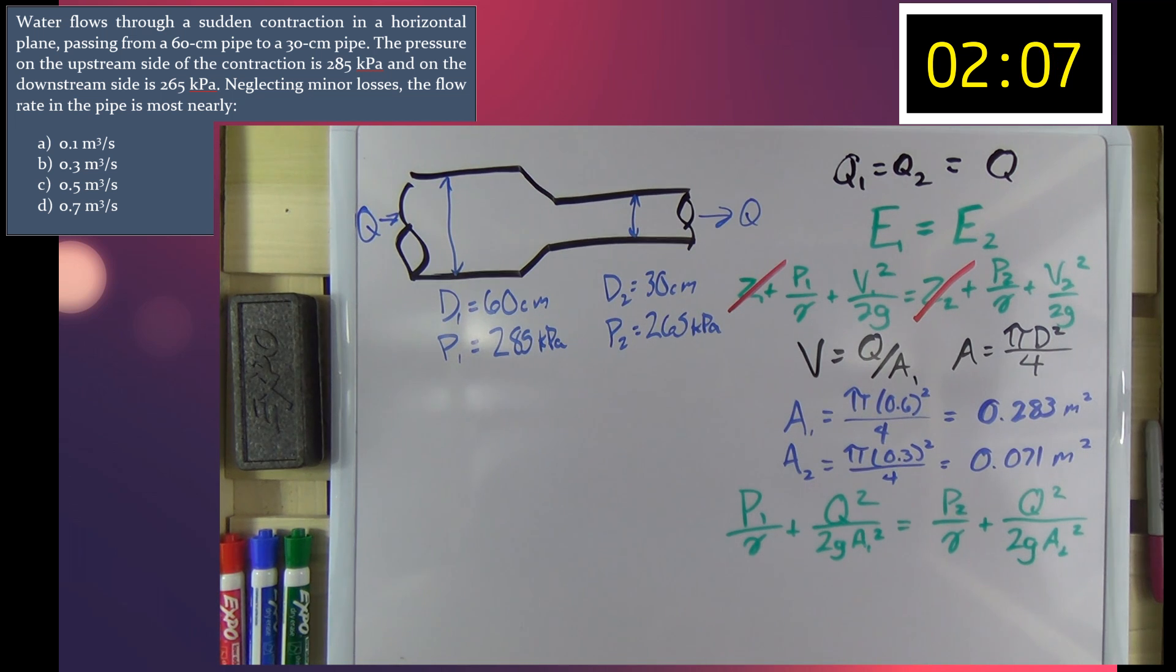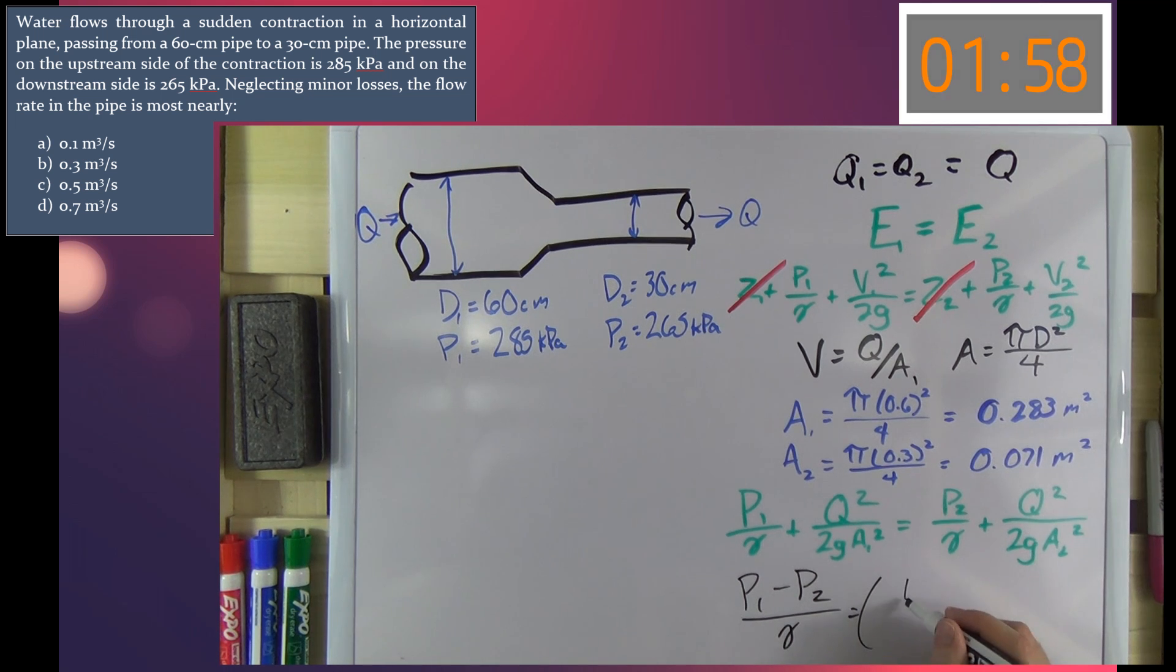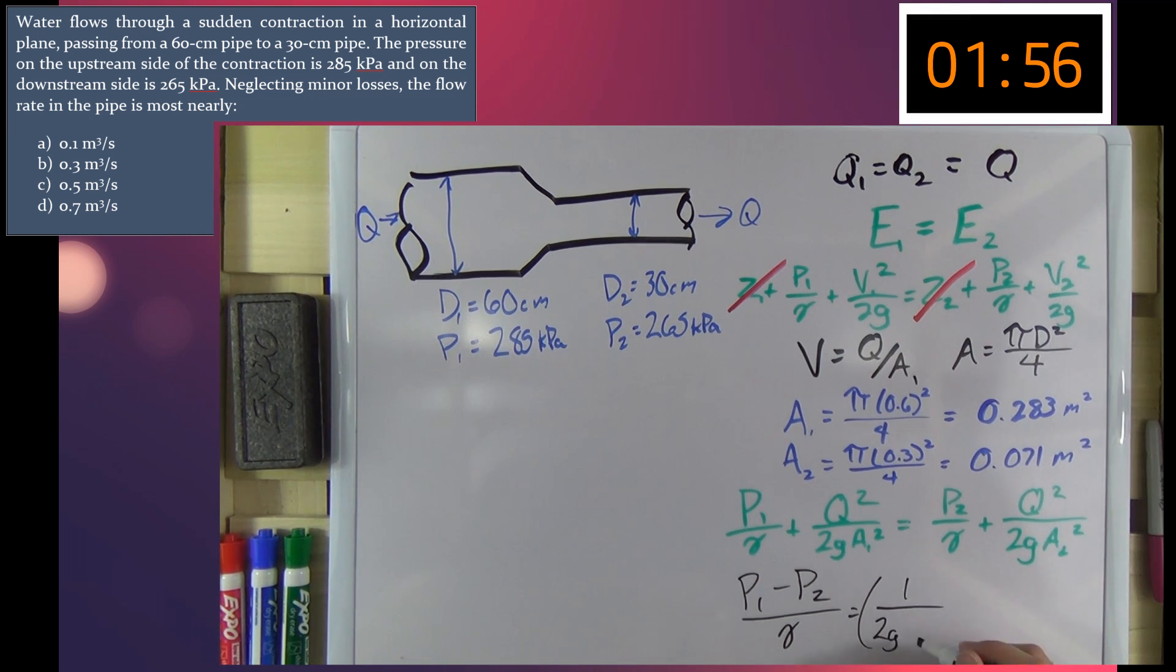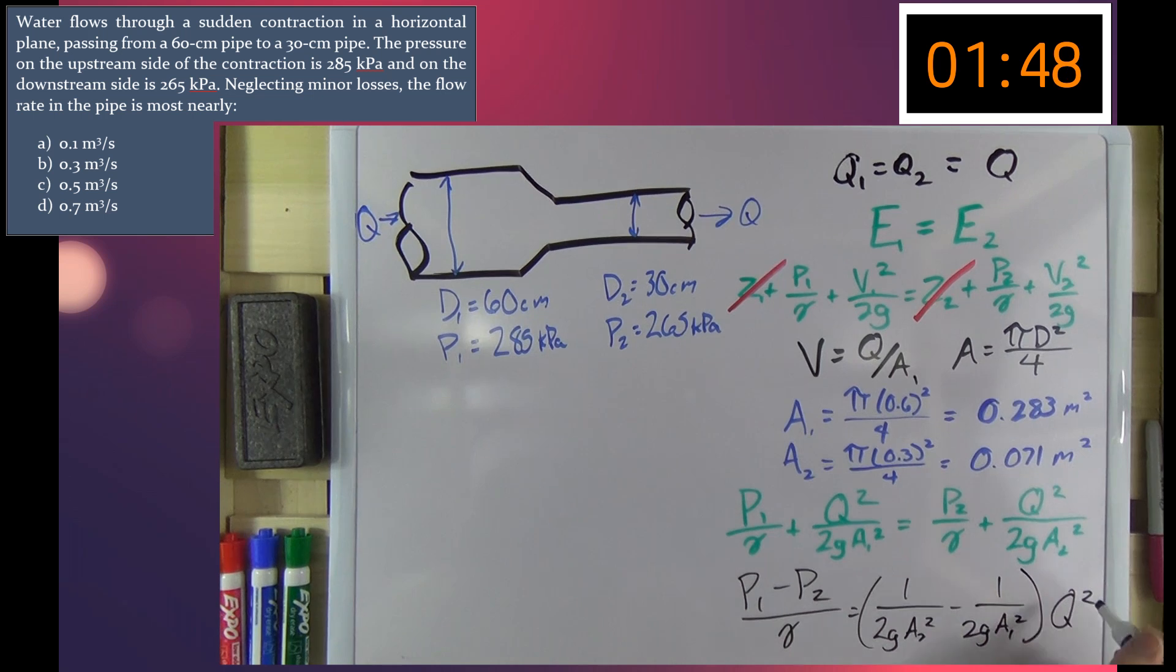So we'll go ahead and rearrange our terms first. We got P1 minus P2 over gamma is equal to 1 over 2GA2 squared minus 1 over 2GA1 squared, all that times Q squared.